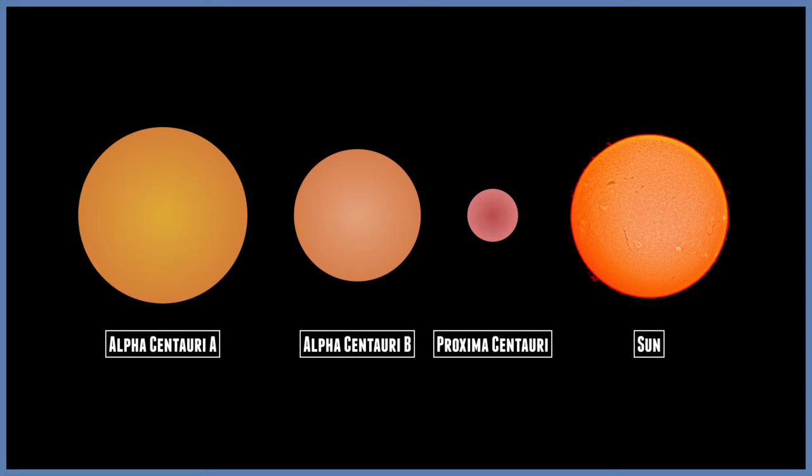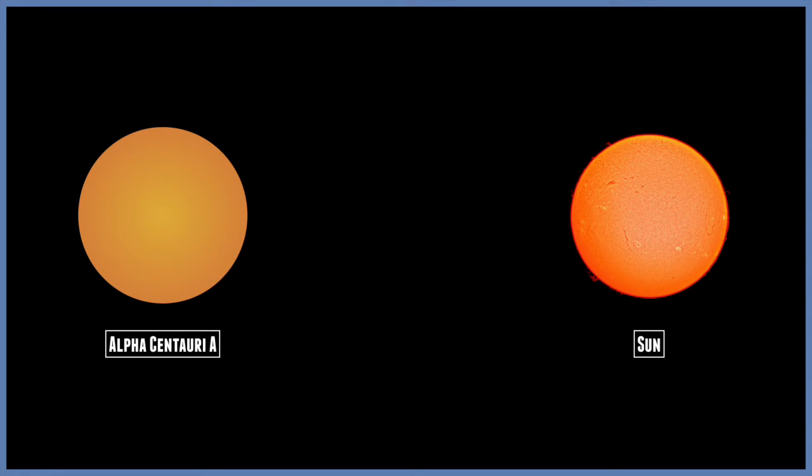The star system closest to the Sun consists of 3 stars. The brightest is Alpha Centauri. Light from Alpha Centauri takes more than 4 years to reach the Sun, meaning Alpha Centauri is just over 4 light years away from our star.